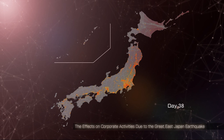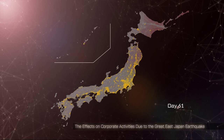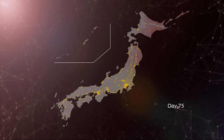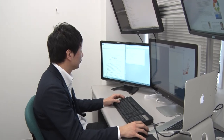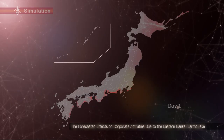This shows that supply chains cover the entire country, and even distant companies are only a few connections away. After 50 days, however, we can see that the red dots become yellow, showing that affected companies are slowly recovering. Refining this model, which was built based on a real disaster, we can estimate the economic impact of future earthquakes expected in the eastern Nankai trough.